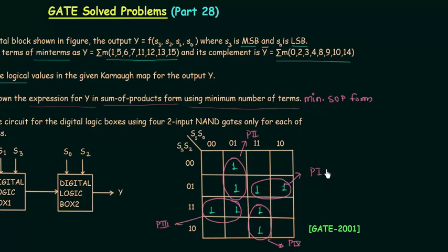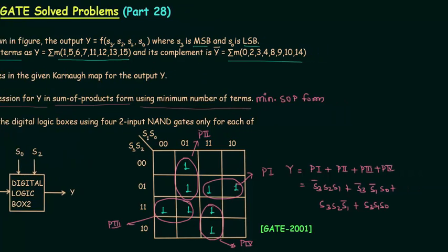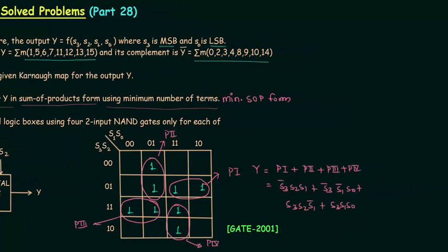These are the four prime implicants, and we will try to obtain the minimized SOP form using them. Y is equal to P1 or P2 or P3 or P4. P1 is equal to S3-complement · S2 · S1. From P2, we have S3-complement · S1-complement · S0. From P3, we have S3 · S2 · S1-complement. From the last group P4, we have S3 · S1 · S0. So these are the four terms and the obtained result is the minimal SOP form.